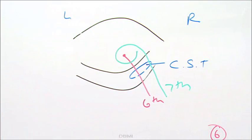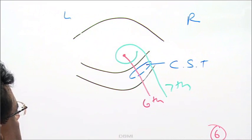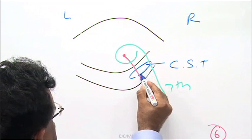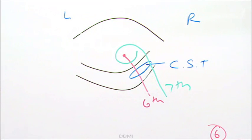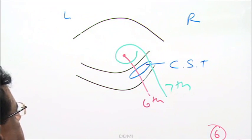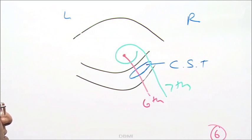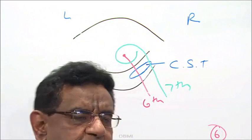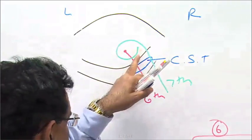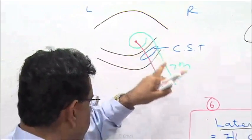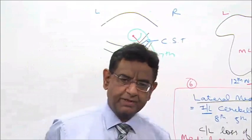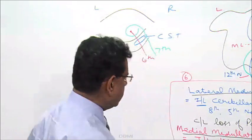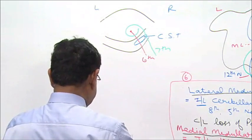The seventh nerve is on the right side. The blue structure is the right corticospinal tract, the red is the sixth nerve, and the green is the seventh nerve. The seventh nerve goes around the nucleus of the sixth nerve and comes out of the pons.